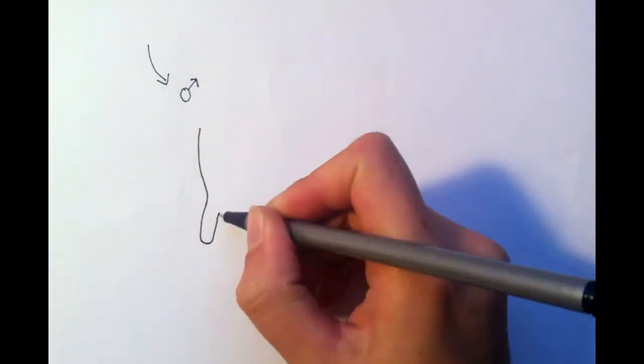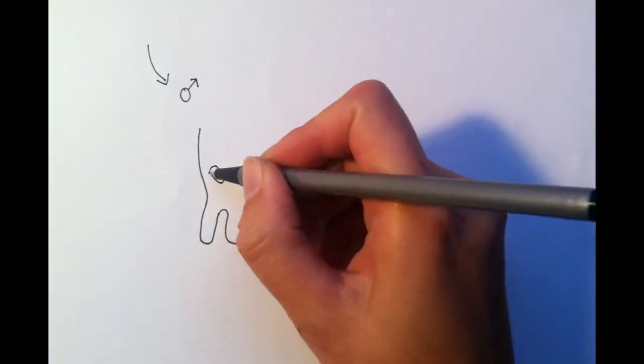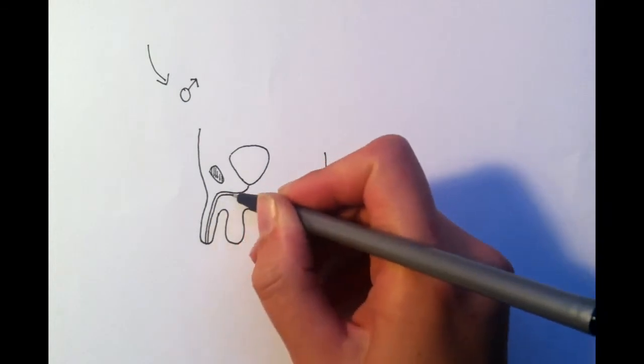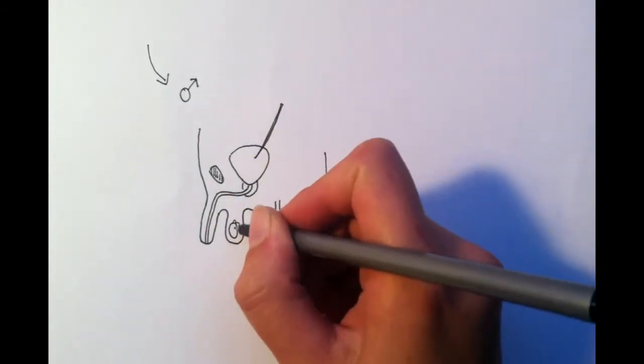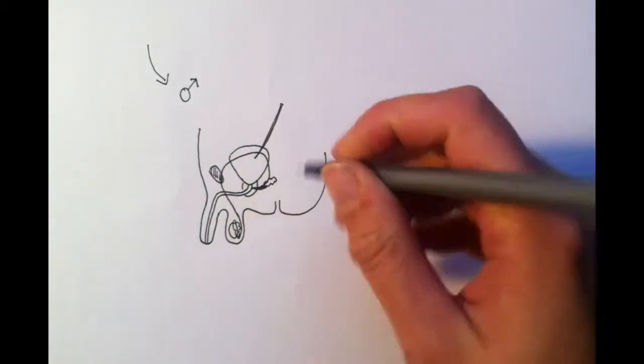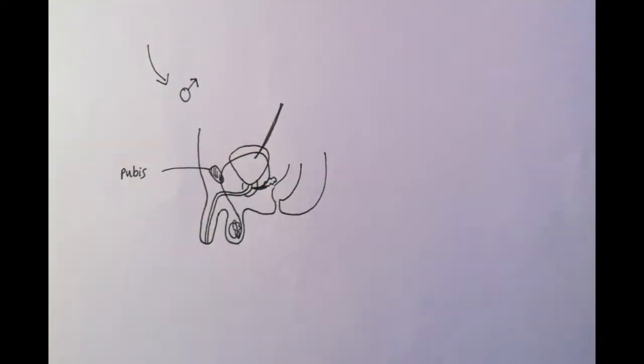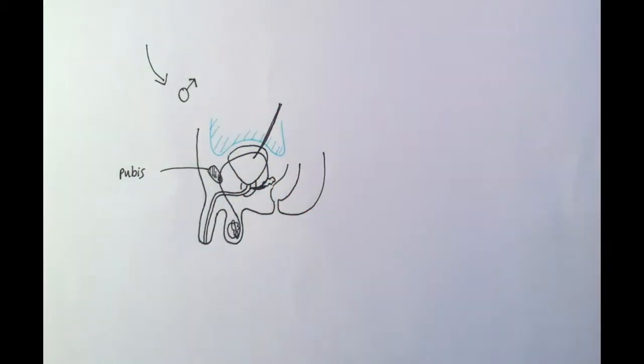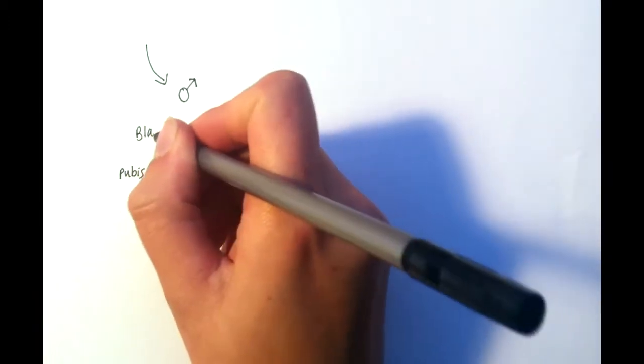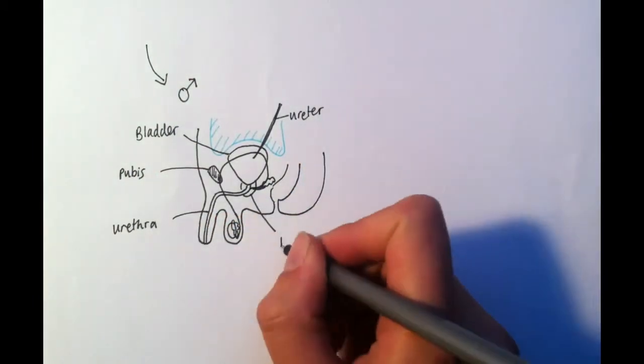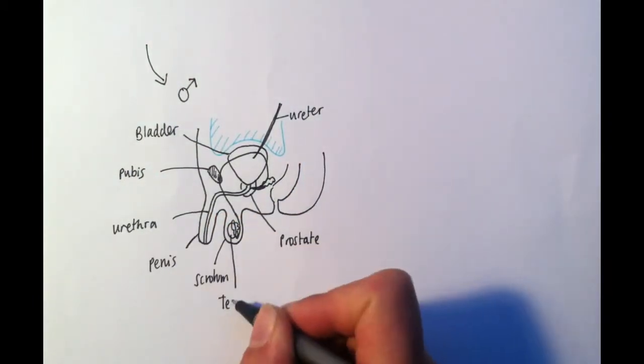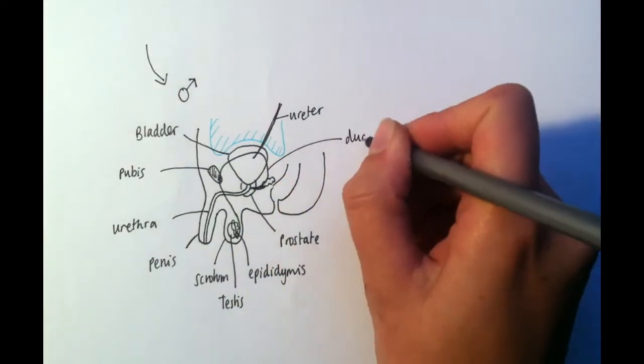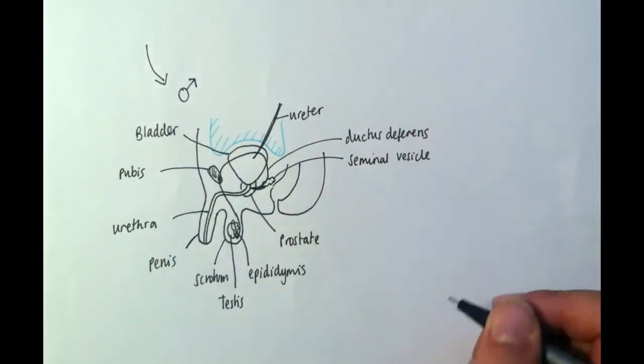Moving on to the male pelvis. The bladder also sits directly posterior to the pubic symphysis. The urethra is longer in males and descends via the penis. The male reproductive organs are also in the pelvis. The ductus deferens ascends from the testes and the scrotum around the bladder and joins into the urethra along with secretions from the seminal vesicles. The male bladder is also covered by a layer of peritoneum.